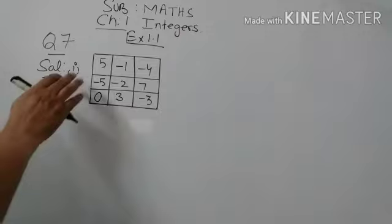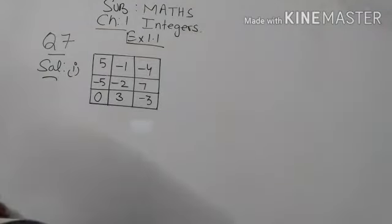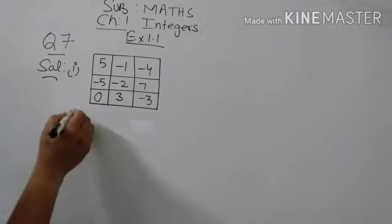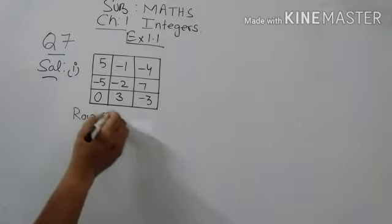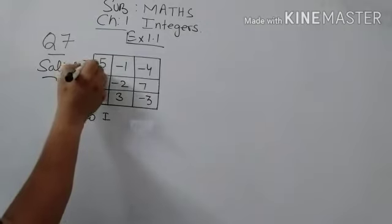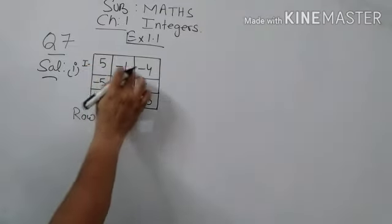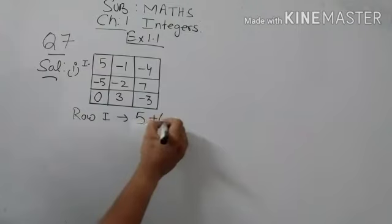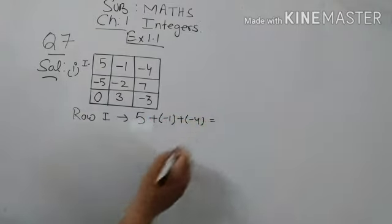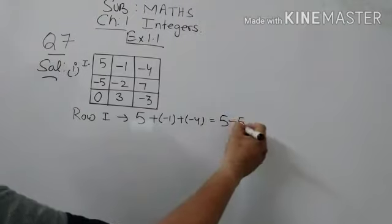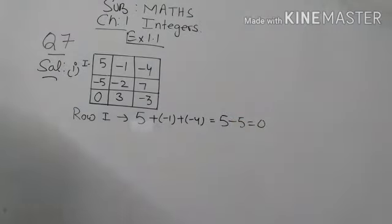We will find the sum of rows, columns, and diagonals in both parts. Starting with part one, row first: we add the integers 5, minus 1, and minus 4. So 5 plus minus 1 plus minus 4 gives us 5 minus 1 minus 4, which equals 0. Similarly, we find the sums of all remaining rows, columns, and diagonals.